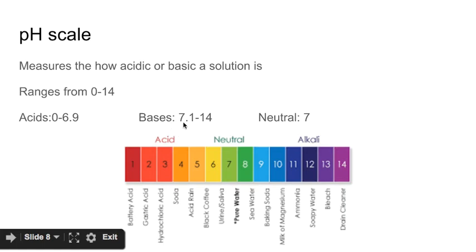Bases are above 7. So 7 point something, all the way up to 14. Something that's neutral, it's going to be a pH of 7. So it's neither an acid nor a base. The only thing, the only example that you would see of a neutral solution would be pure water.